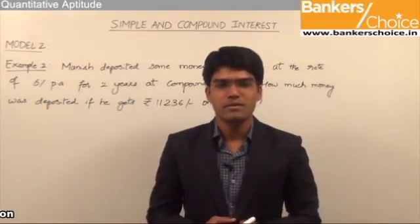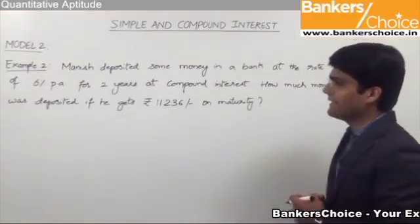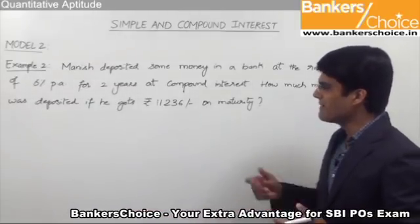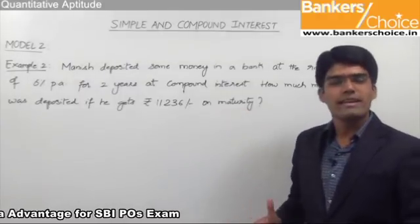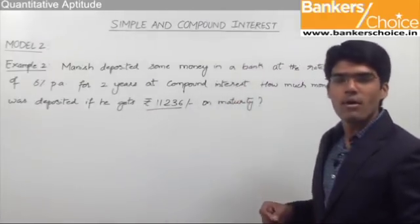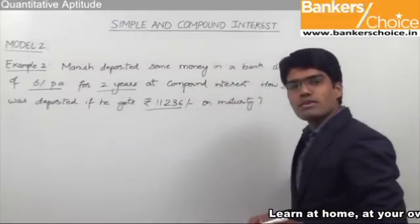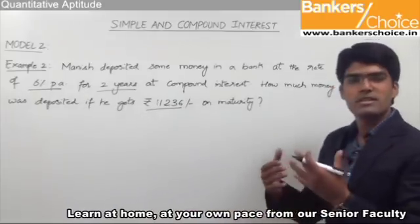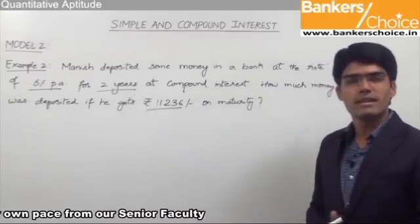Let us now take another example. Manish deposited some money in a bank at 6% per annum for 2 years at compound interest. He gets ₹11,236 on maturity. The amount received on maturity is the total amount, so ₹11,236 is the total amount after two years. The rate is 6% per annum, the time period is 2 years, and we need to find the principal — how much money was deposited.